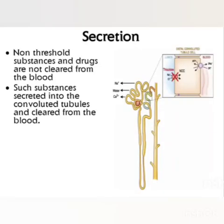The third and last phase in urine formation is secretion. During filtration through the glomerulus, non-threshold substances and drugs may not be cleared from the blood because the blood does not remain long in the glomerulus. Such substances are secreted into the convoluted tubules and cleared from the blood. These substances include para-aminohippuric acid and penicillin, which pass from the blood into the urine.